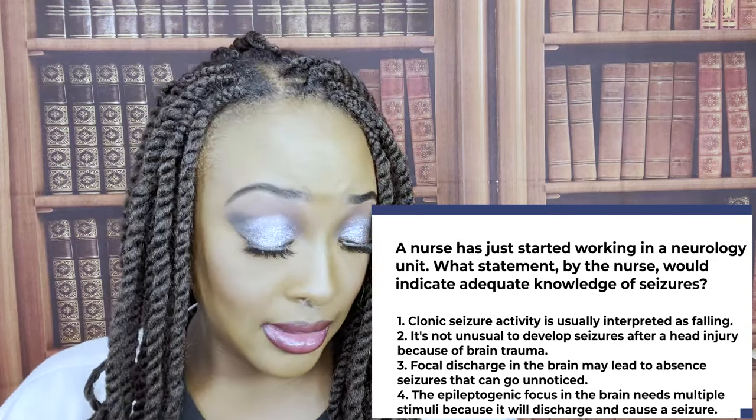The patient can have brain trauma and the seizure won't happen right away — it can be delayed, even after 48 hours. Seizures are like overfiring of neurons in the brain, and traumatic injury increases the risk. Choice one is wrong — that describes atonic seizures, not clonic. Choice three is wrong — absence seizures are generalized, not focal. Choice four is wrong — the epileptogenic focus already has hyperexcitable neurons, so multiple stimuli are not needed. Number two is the correct answer.